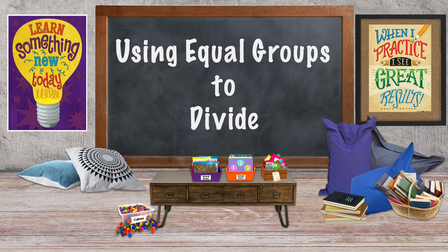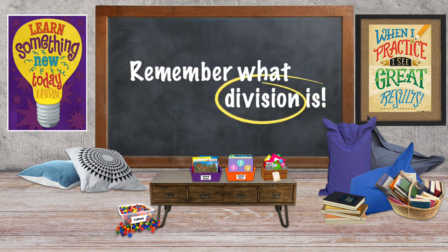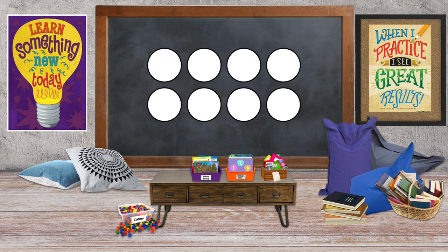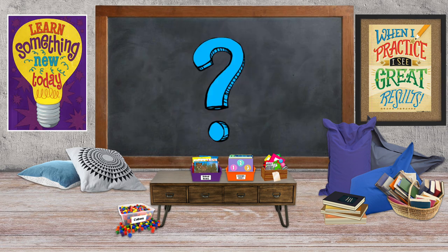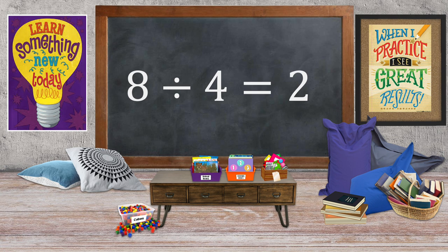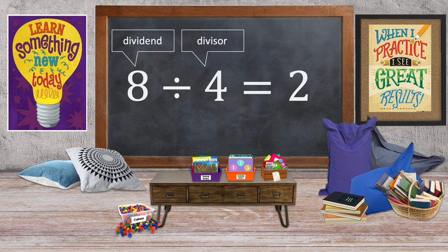First of all, let's remember what division is. Division is breaking a set or a whole number into equal groups. The number that's being divided is the dividend. The number that the dividend is being divided by is the divisor, and the answer is the quotient.